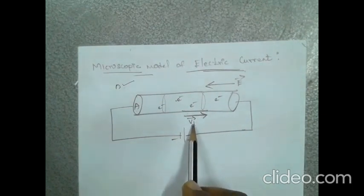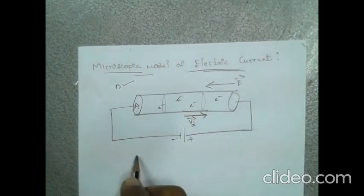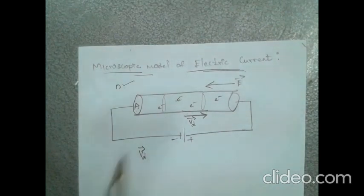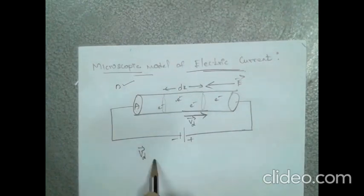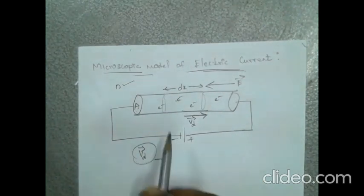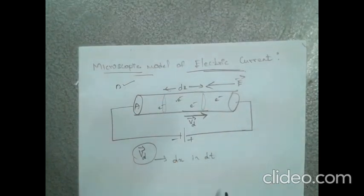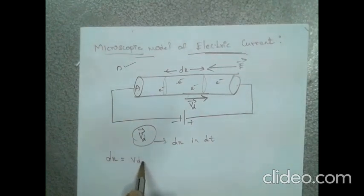The drift velocity VD is directed from left to right — opposite to the electric field. Suppose the electrons have drift velocity VD; in a small time interval dt, the electrons travel a distance dx equal to VD times dt.